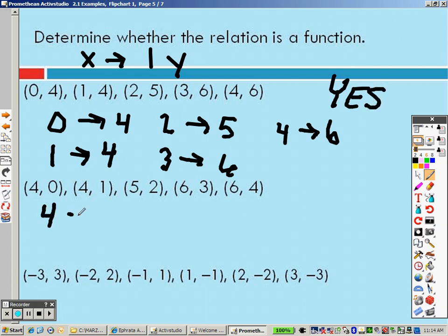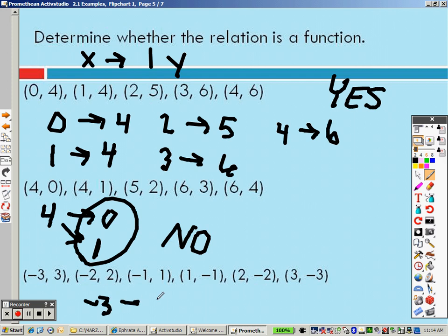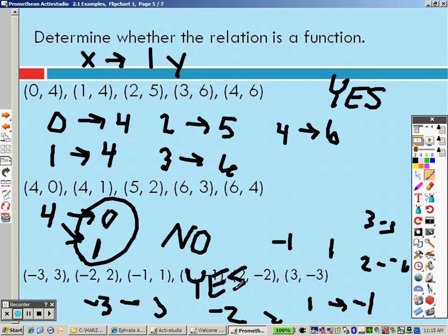However, this one, 4 goes to 0, and it also goes to 1. See that right here? 4 goes to 0 and it goes to 1. It goes to 2y's. Since it goes to 2y's, this would be no, it is not a function. So you can look here at this one. Negative 3 goes to 3, negative 2 goes to 2, negative 1 goes to 1, 1 goes to negative 1, 2 goes to negative 2, and 3 goes to negative 3. They all go to their own little different thing. So yes is the answer to that one.